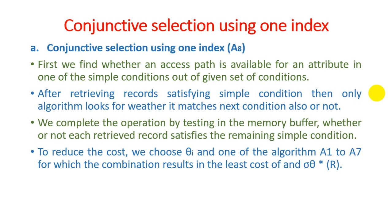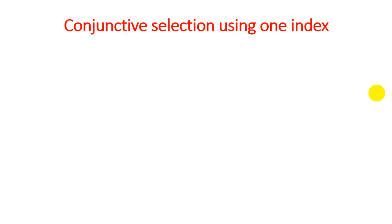To reduce cost, we select delta-i and one of the algorithms A1 to A7. There are many algorithms to implement selection operations, and we choose the combination that results in the least cost — selection delta multiplied with relation R — estimating cost based on the data required from the customer's side.